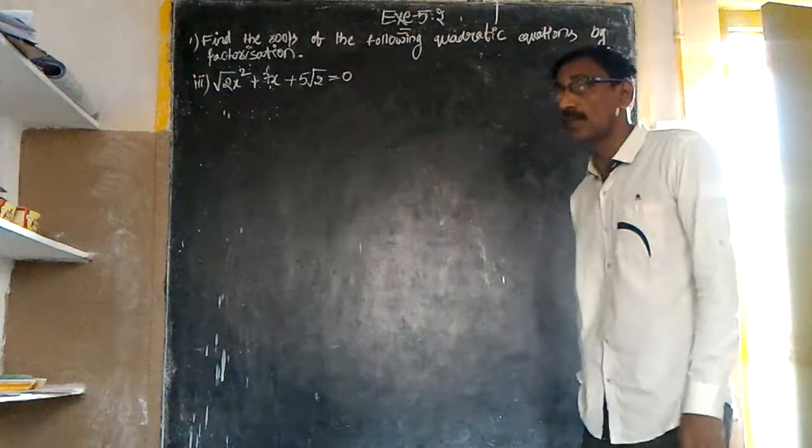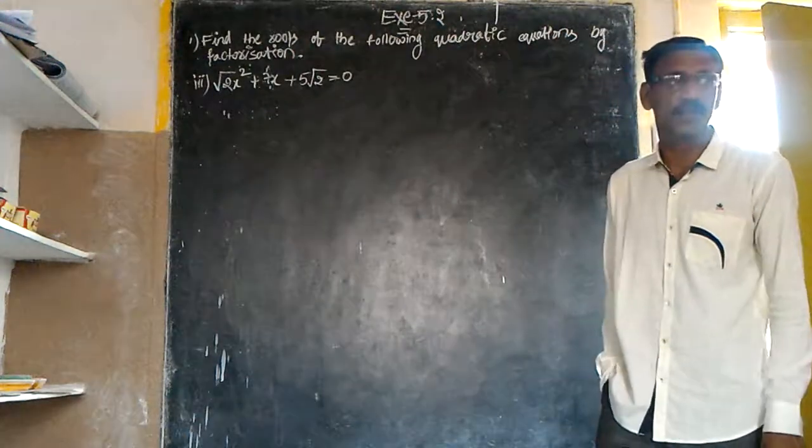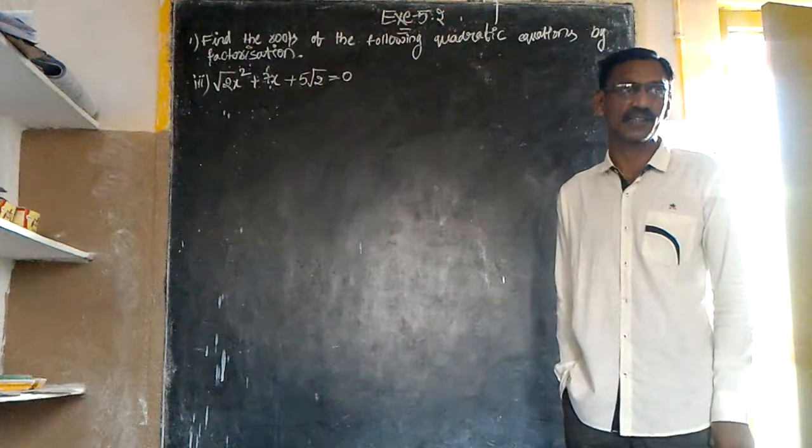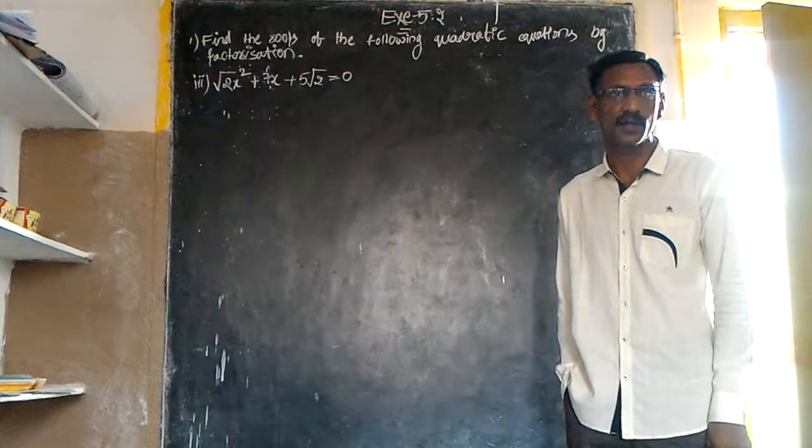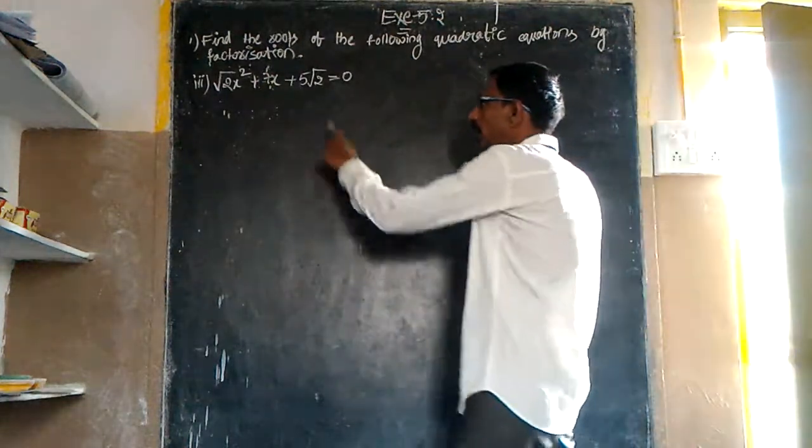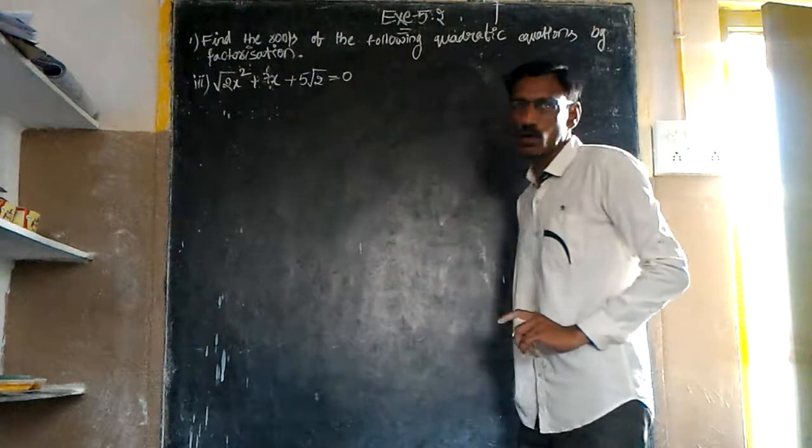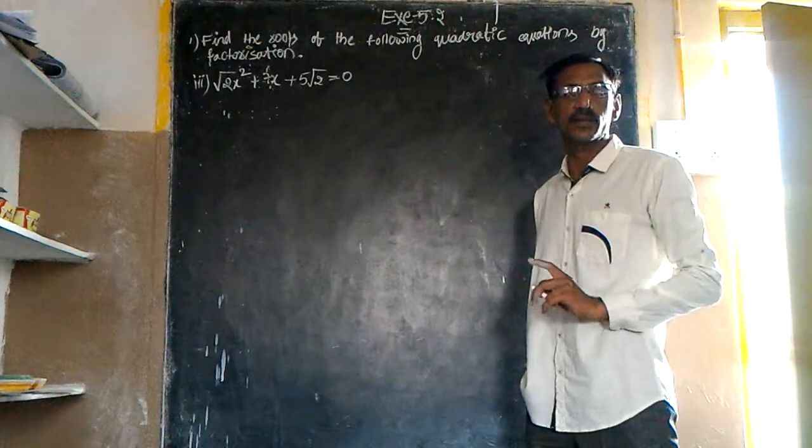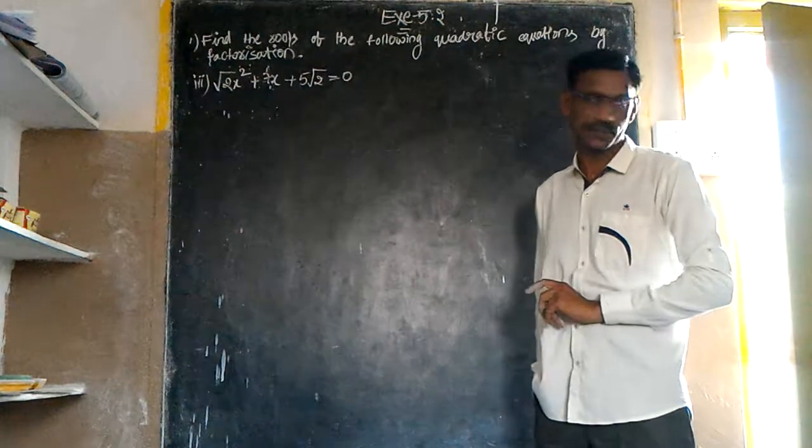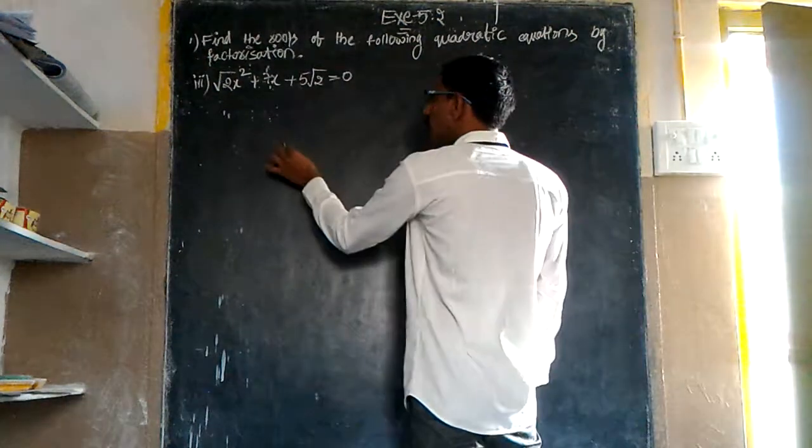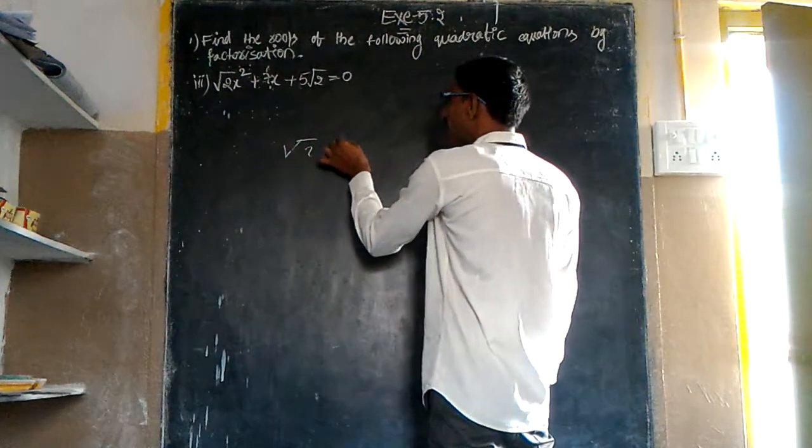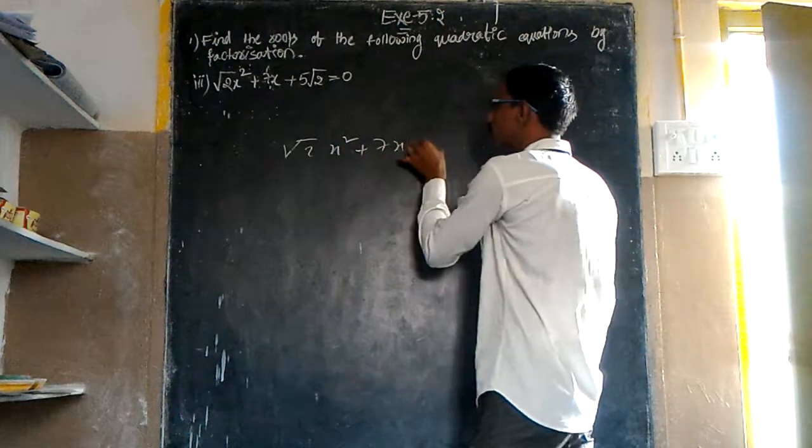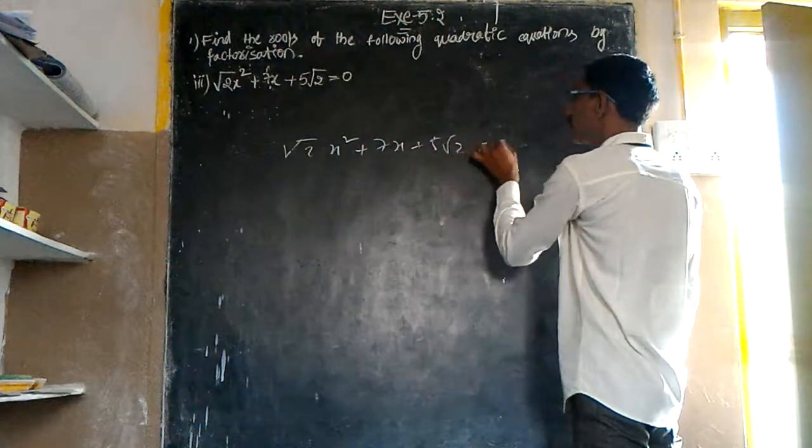Find the roots of the following by factorization. What are the roots? √2x² + 7x + 5√2 = 0.